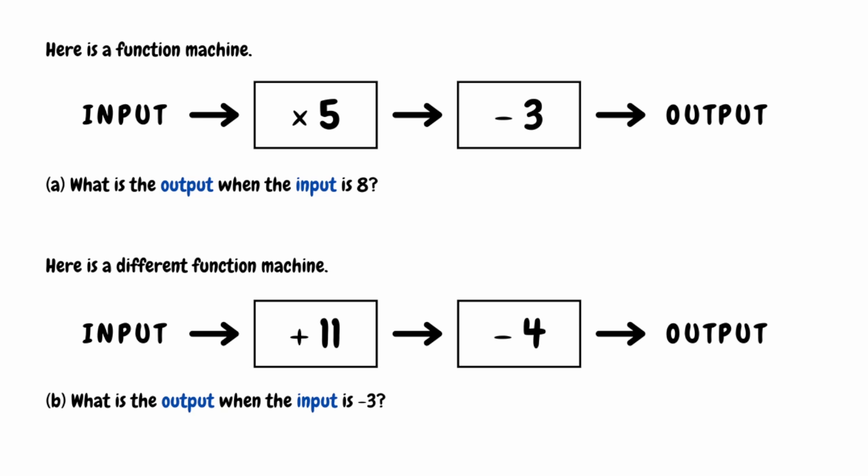To use a function machine, we start with our input on the left-hand side and then follow the operations from left to right. So for this first function machine, we'd start with our input, we'd then multiply by 5, and then we would subtract 3 to get our output.